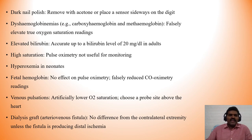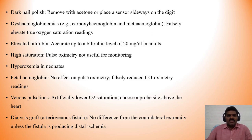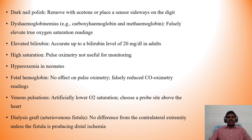Dark nail polish should be removed with nail polish remover, or the sensor placed sideways on the digit so light traverses the pulp. Dyshemoglobinemias — specifically carboxyhemoglobin and methemoglobin — can cause falsely elevated true oxygen saturation readings. Elevated bilirubin: readings are accurate up to a bilirubin level of approximately 20 mg/dL. At high oxygen tensions, pulse oximetry is not useful for monitoring hyperoxemia. Fetal hemoglobin has no direct effect on pulse oximetry, but can cause falsely reduced co-oximetry readings. Venous pulsations can artificially lower SpO2 — choose a probe site above the level of the heart. Dialysis grafts with an arteriovenous fistula show no difference from the contralateral extremity unless the fistula is producing distal ischemia.